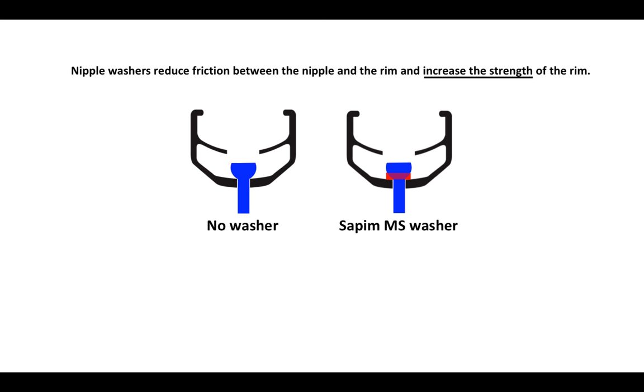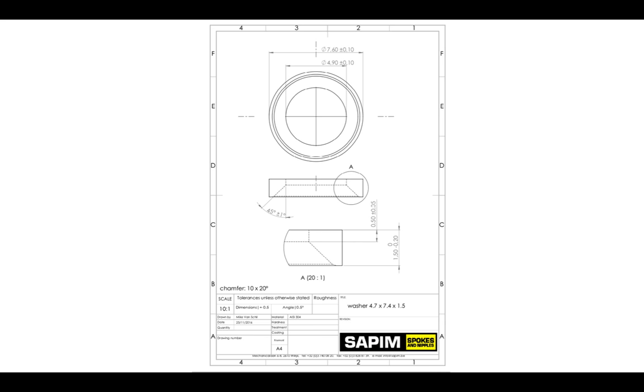Now we will look at how washers can arguably increase the strength of a rim. We will compare two situations with no washer and a Sapim MS washer. In each picture, we are going to look very carefully at a couple of places: right here, where the nipple or the washer makes direct contact with the hole, and then down here, where the spoke nipple emerges from the hole. I will continue to use my own graphics for illustration purposes, but here is a nice CAD drawing that I got from Sapim about the new washer.